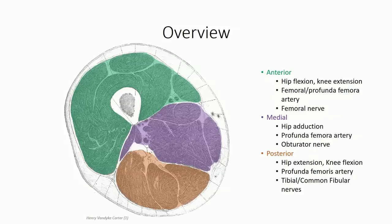Before diving in, let's return briefly to this overview slide of the compartments of the thigh. In the previous session, we discussed the anterior and medial compartments. We complete the picture today with a look at the posterior compartment. This is made up primarily of the hamstring muscle group, responsible for hip extension and knee flexion.